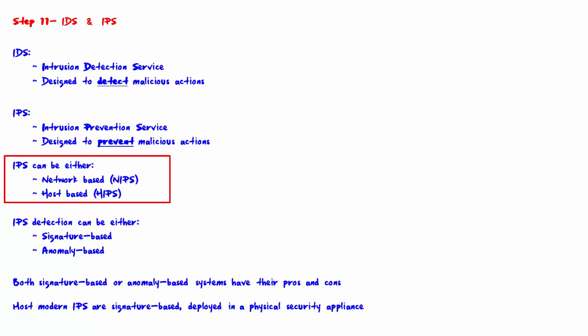N-IPS requires that IPS be installed on an appliance at the network perimeter, such as on a firewall. H-IPS requires that IPS be installed on every host that requires protection; usually it's only installed on specific servers.